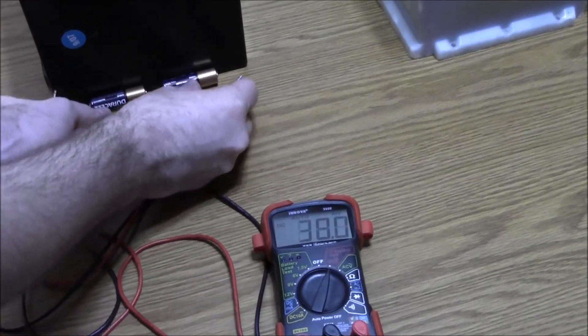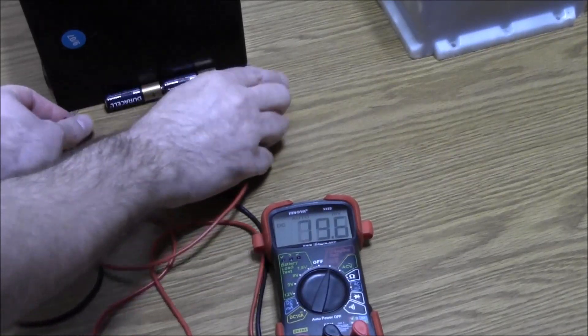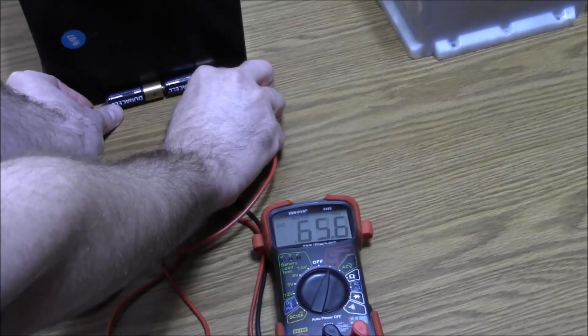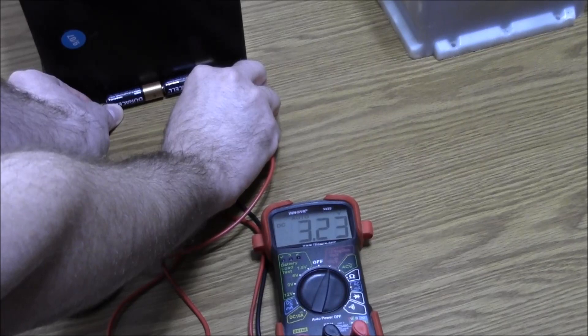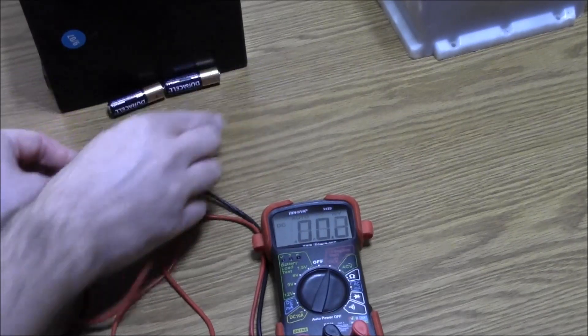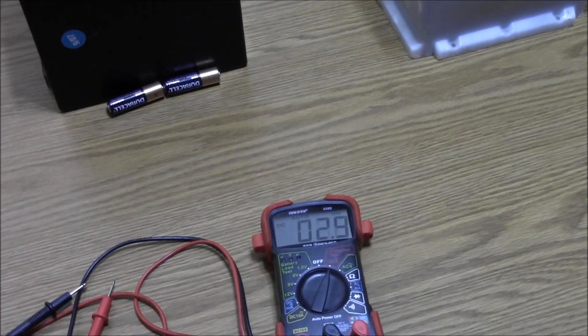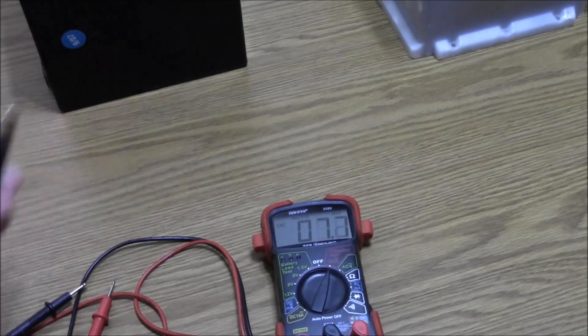Now, by touching the positive to the negative, I should get a double voltage reading. As you can see there, 3.2. So 1.6 plus 1.6 gives you 3.2. That's an example of series wiring.